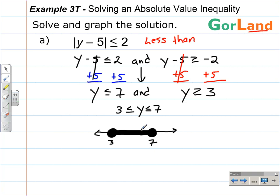So that was example 3T, solving an inequality with less than, so we used AND from the city of Gorland.